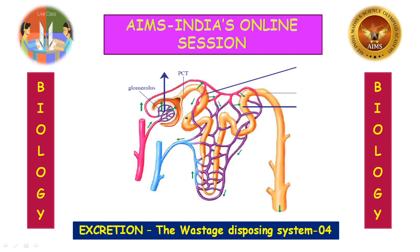The glomerular filtration rate is the quantity of glomerular filtrate formed each minute in all the nephrons of both kidneys. In a normal person, this glomerular filtration rate is about 125 ml per minute.